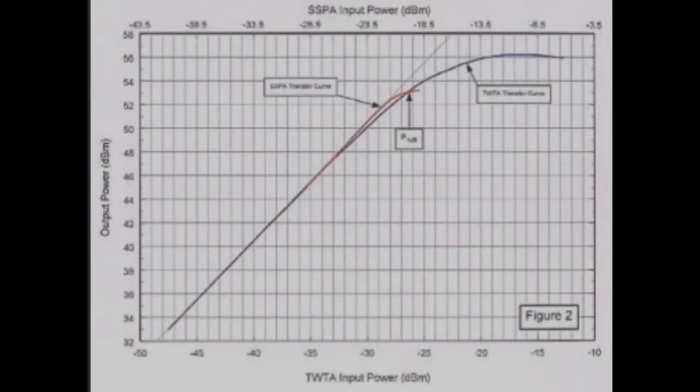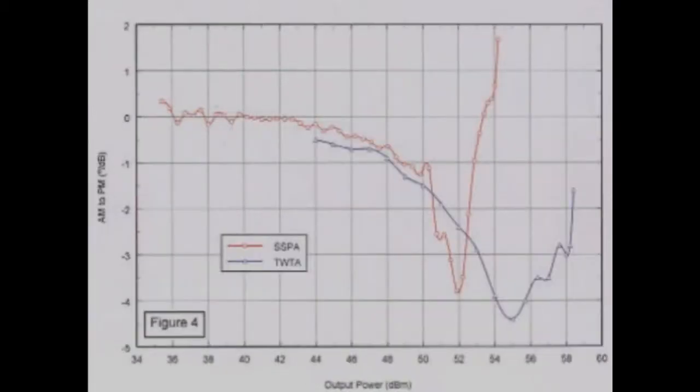Even though a tube and a solid state device have identical 1 dB compression points, the characteristic is much different. The tube amplifier has a much more leisurely curve, whereas the solid state device saturates much earlier than the tube. Because of this, tubes are much more sought after for their linearity.